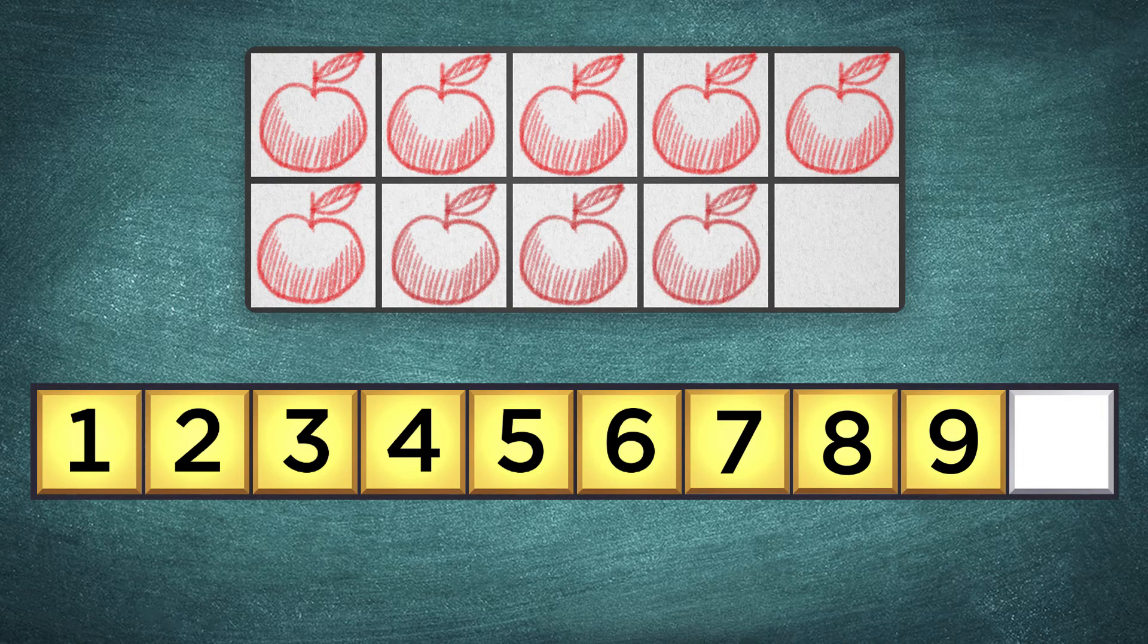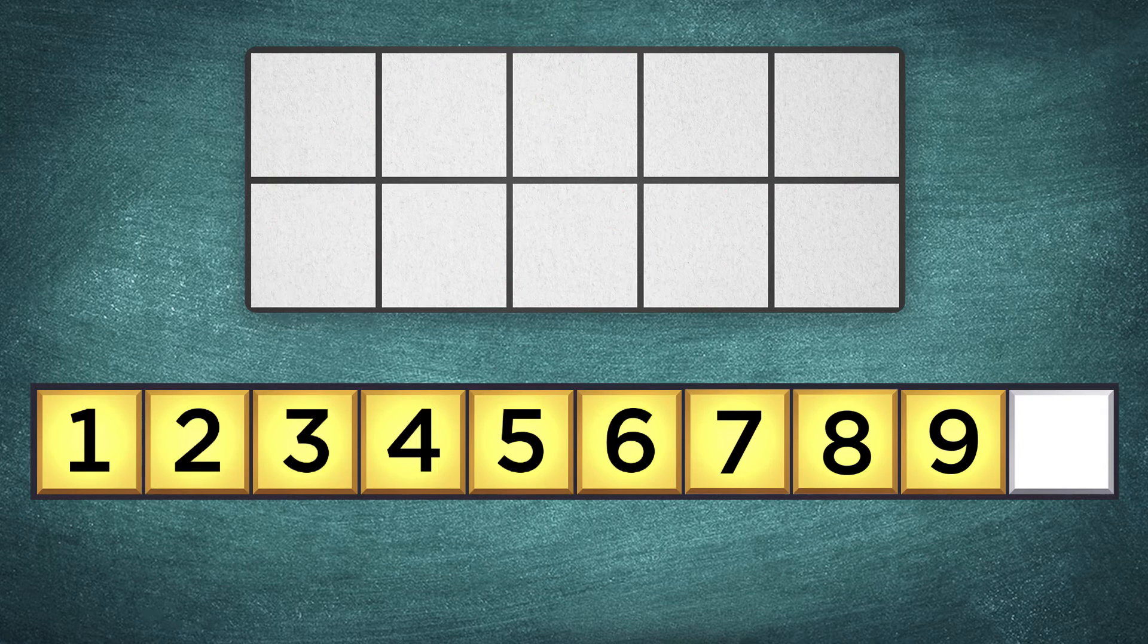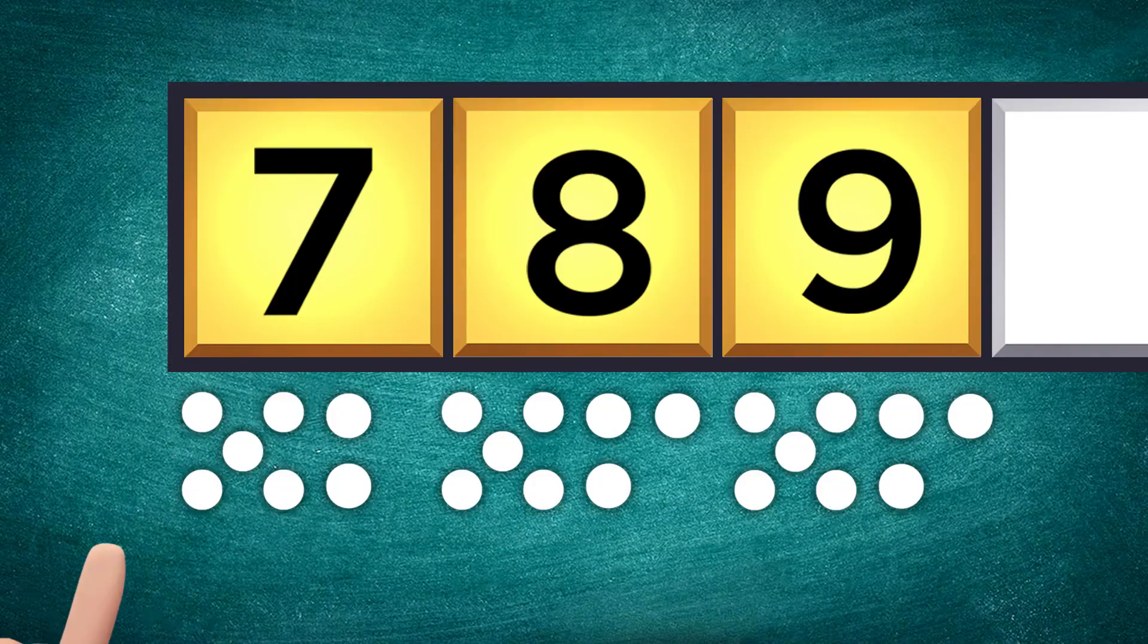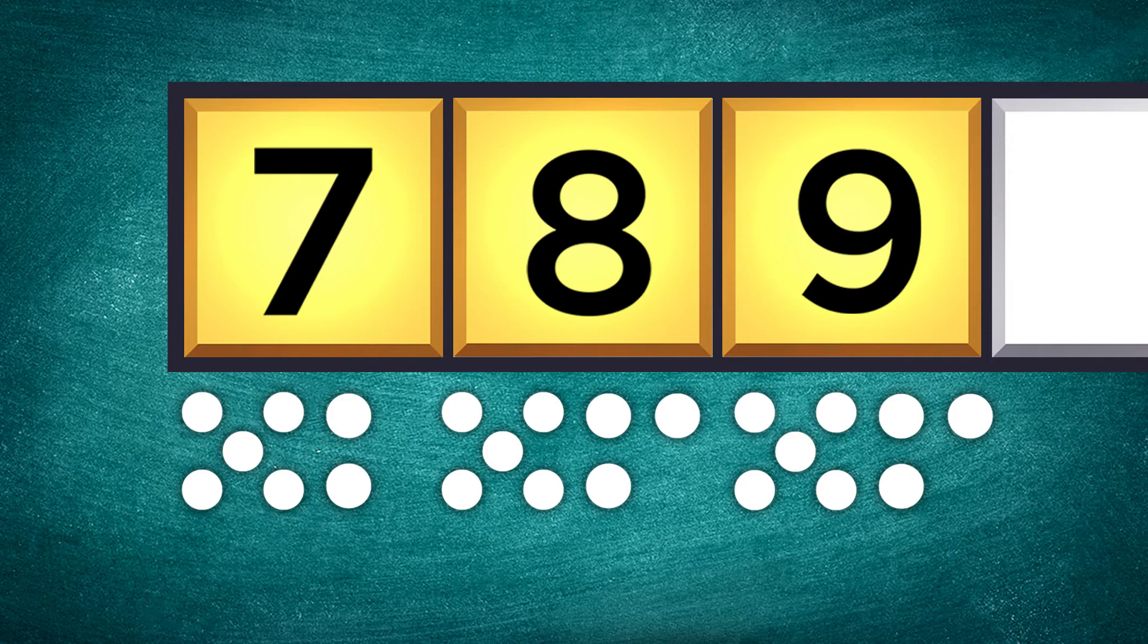But what does it mean? It means we have 9 of something. 7. 8. We used to have 8, but now we have one more. 8. 9. 9.